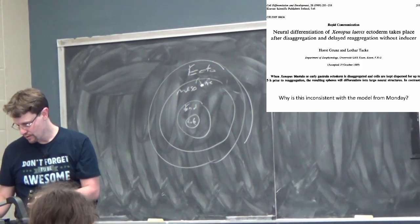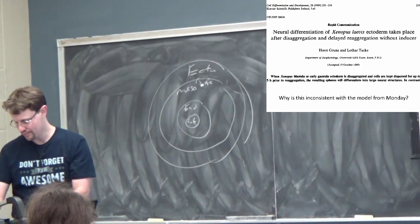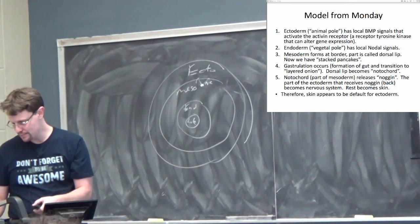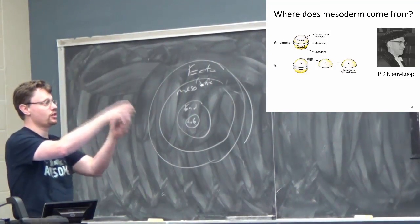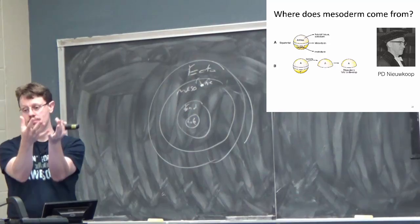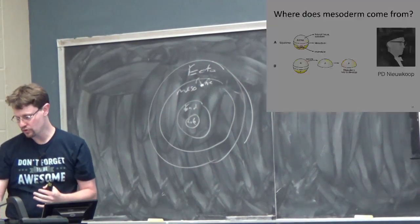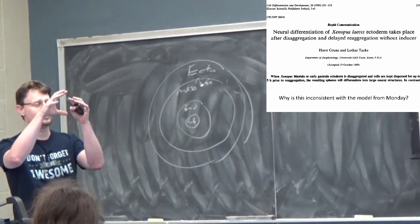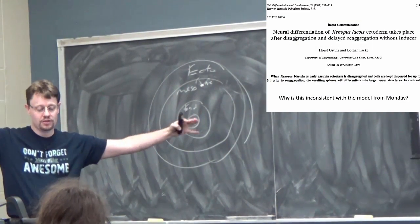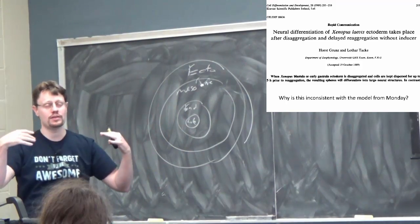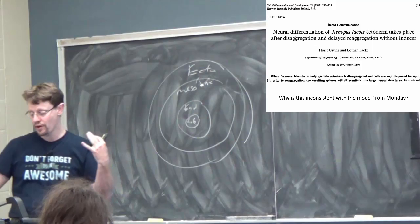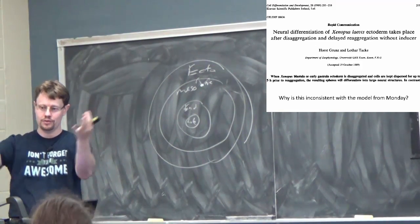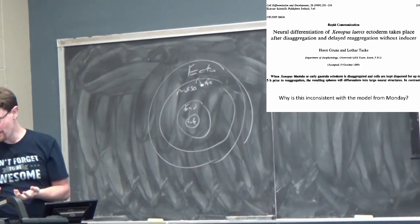So we had before this business here, where if we take a chunk of ectoderm and leave it chunked together, it forms skin. And that sort of contributed to our idea that skin is the default. But then if we take those cells and instead of the ectoderm being a chunk, we separate them out so the cells aren't near each other anymore and they're not communicating with each other and they're not building up a high concentration of BMP around one another, then the individual little islands become nervous system tissue. That's one piece of evidence.